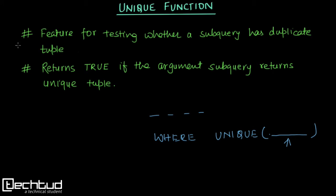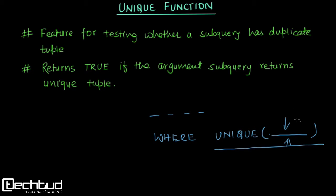So we have two points here. First, UNIQUE is a feature for testing whether a sub-query has duplicate tuples. Second, it will return true only if the argument query has unique tuples.